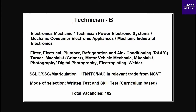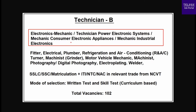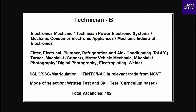Next, Post Categories Information. The Technician B category total ITI information: Electronics Mechanics, Technician, Power Electronics Systems, Mechanics Consumer Electronics Appliances, Mechanics Industrial Electronics. This category has a total of 50 vacancies with unreserved, OBC, SC, ST, and Economically Weaker Section categories.